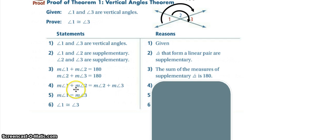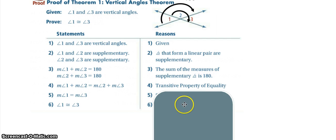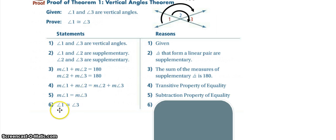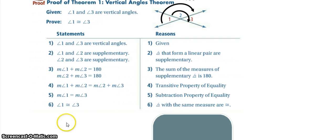For step four, we have that angle one plus two is going to equal angle two plus three. Since they were both equal to 180, that holds true because of the transitive property of equality. For step five, we see that angle one is equal to angle three. How do we get there from step four? All we had to do was remove angle two — we subtracted angle two from both sides. Then we see that angle one is congruent to angle three, because angles with the same measure are congruent. If the measure of angle one equals the measure of angle three, that makes the angles themselves congruent.